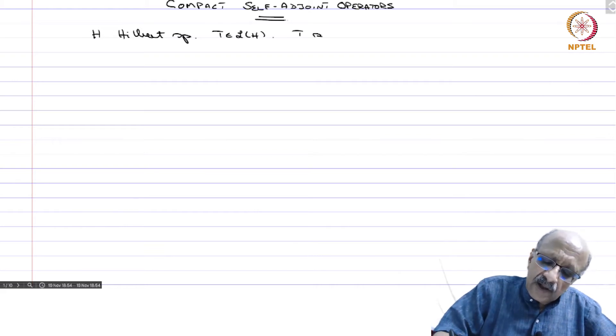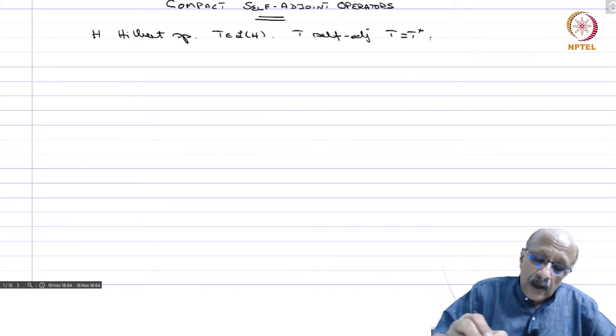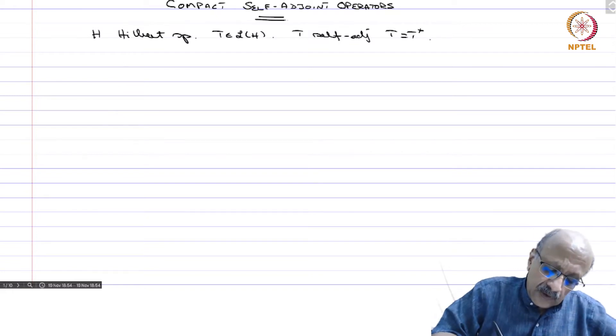We say T is self adjoint if T equals T star and we have already seen the following thing.